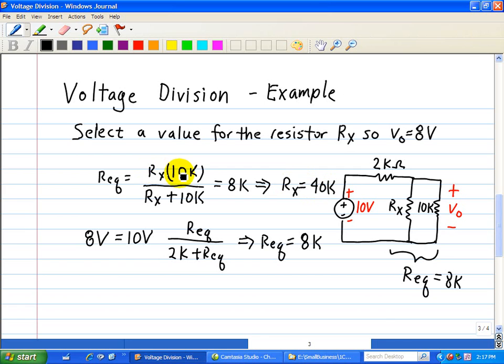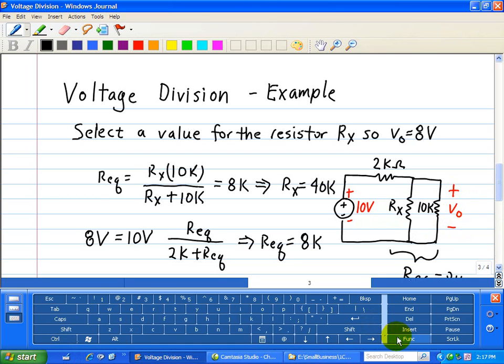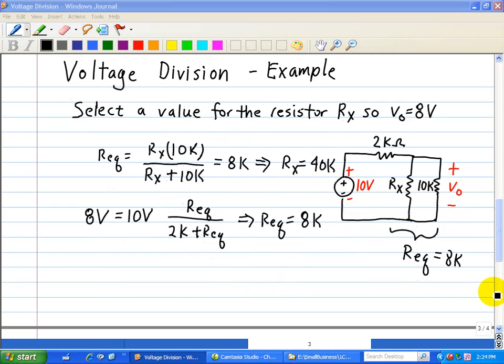And we can check the answer, 40 times 10 is 400, 400 divided by 50 is 8 kilo ohms. So that's how we apply various analytical concepts, the concept of R equivalence and the concept of voltage division. That's how we apply voltage division and the concept of R equivalence to analyze this circuit in terms of finding Rx.